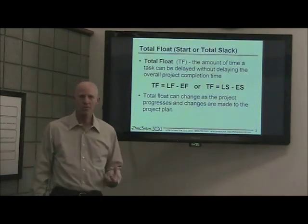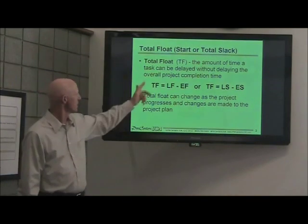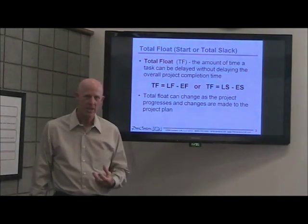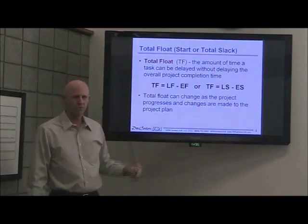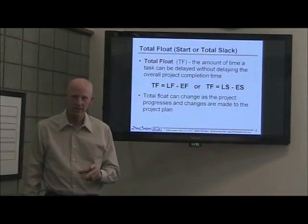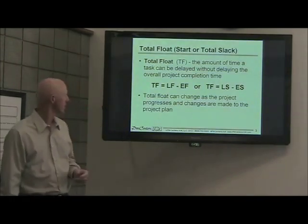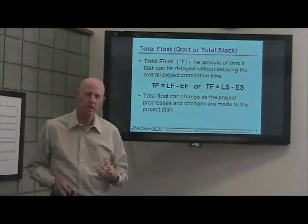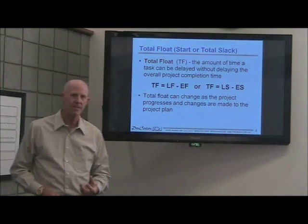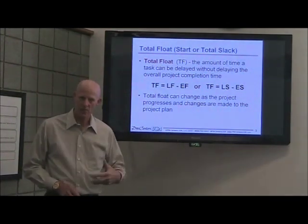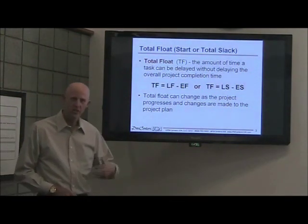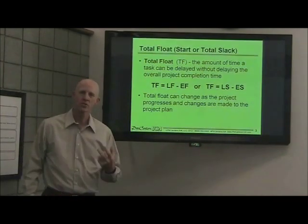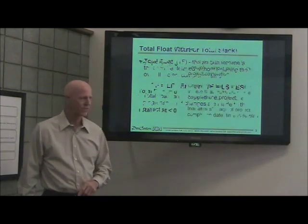Let's talk about the two terms. Total float, by definition, is the amount of time you can delay a task without delaying the project completion date. The calculation for total float is the late finish minus the early finish, or the late start minus the early start. Total float will change as you do schedule updates because, as you change the durations or the actual dates, all the calculations will be updated and your total float values will change as your schedule changes. They are not static values.